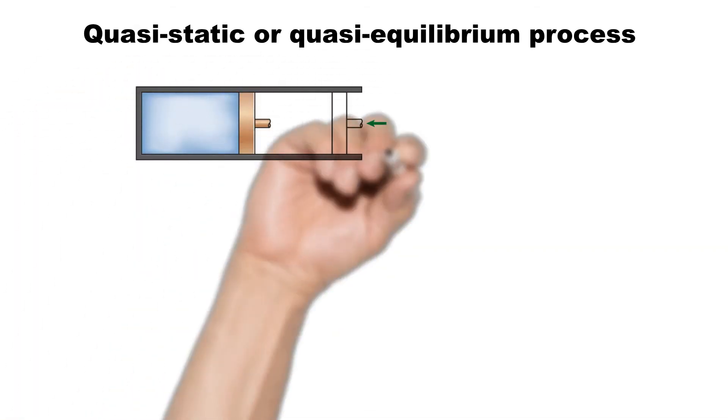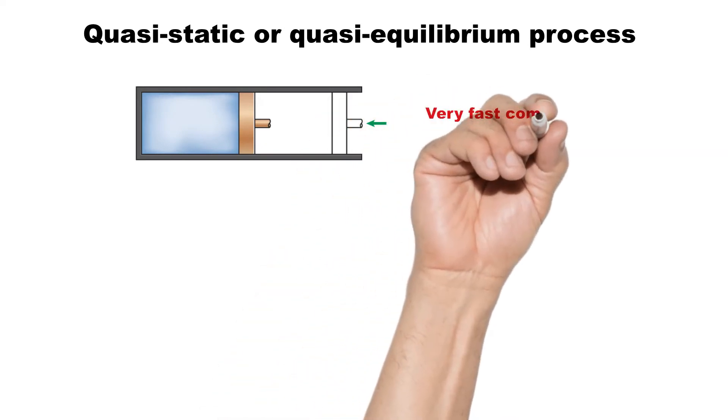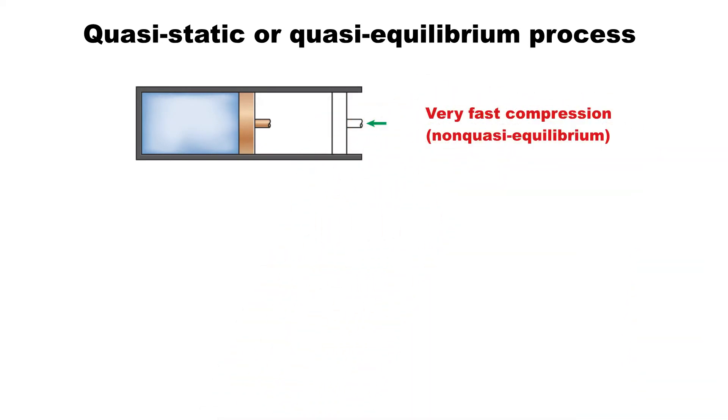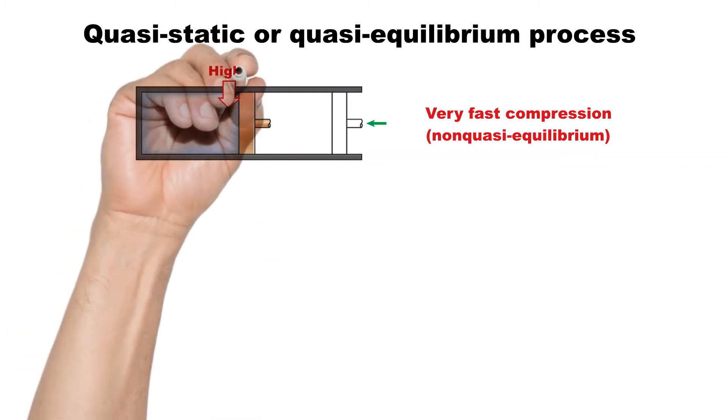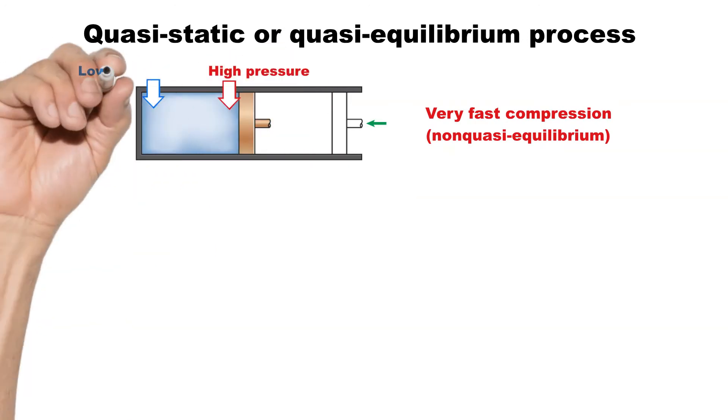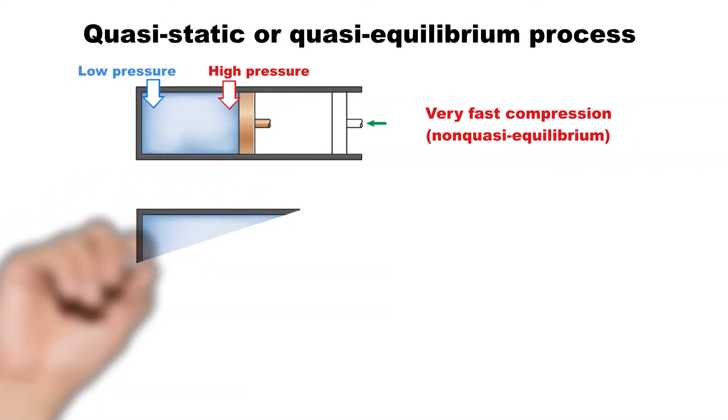When a process proceeds in such a manner that the system remains infinitesimally close to an equilibrium state at all times, it is called a quasi-static or quasi-equilibrium process. In the image shown on the screen, a gas piston cylinder is compressed suddenly. The molecules near the piston will not have enough time to escape, and they will have to pile up in a small region in front of the piston, thus creating a high pressure region there. Because of this pressure difference, the system can no longer be said to be in equilibrium. This makes the entire process non-quasi-equilibrium.